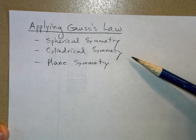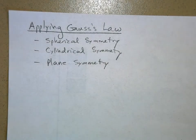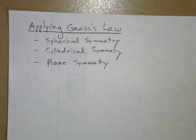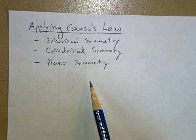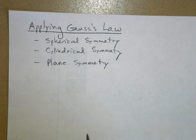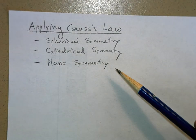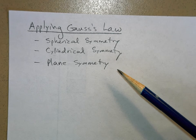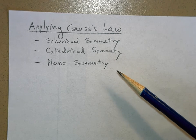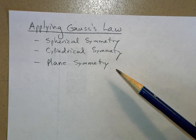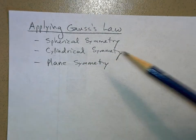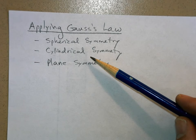Cylindrical symmetry happens when a charge is distributed on a line, a pipe, or something that acts like a cylinder. Then we have plane symmetry, where the charge is smeared over an infinite plane. Of course there are no infinite planes in the universe, but planes that are large enough act like an infinite plane if you're close enough. The same applies to a cylinder — this implies an infinitely long line of charge.